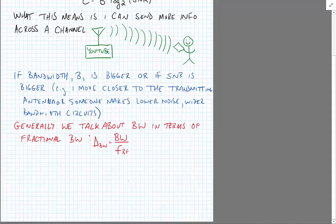Generally we talk about bandwidth in terms of the fractional bandwidth available, and our fractional bandwidth we're going to define as the bandwidth of the signal that we're operating on relative to the RF carrier bandwidth.